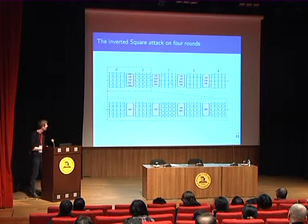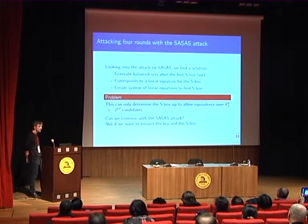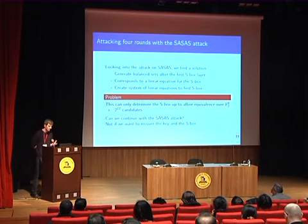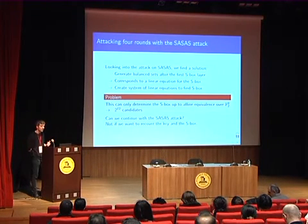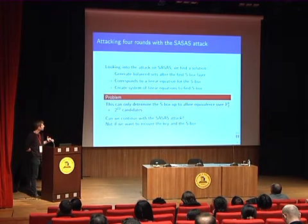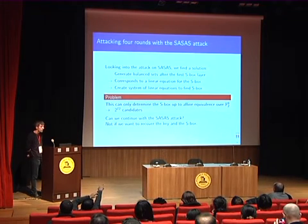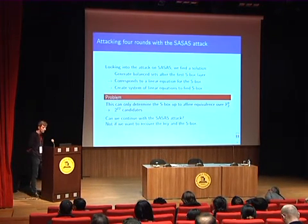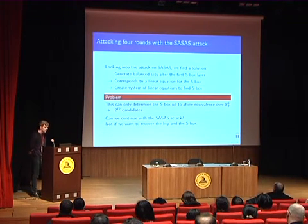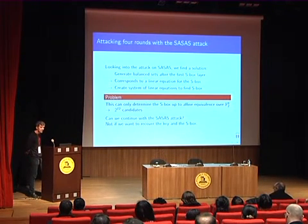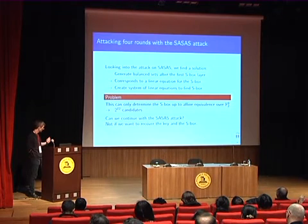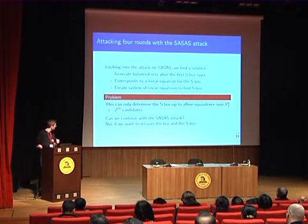What can we do? We can look into the literature and see there is the SASAS attack on a very general structure. We can use the same technique they use there, based on the following observation: if we have a balanced set after SubBytes, this corresponds to a linear equation in the variables of the SBOX. By creating many balanced sets, we can hope to generate enough linear equations to actually deduce the SBOX. But we encounter a problem: balancedness is invariant under affine equivalence, so we end up with 2^72 SBOX candidates — quite a lot to test. The SASAS attack unfortunately cannot help further because it is a decryption attack and does not recover the key or SBOX — but that is what we want to do here.